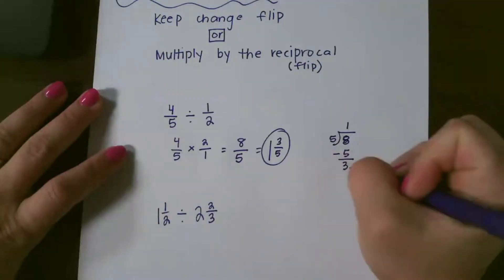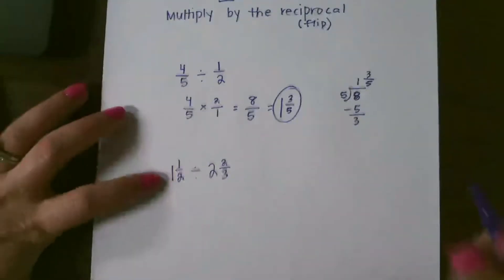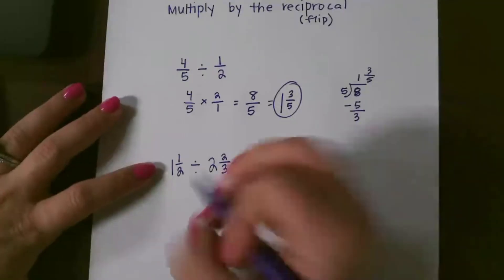So again, 1 with 3 left over, and fifths being our denominator. Alright, for the next one, we have mixed numbers, so we have to change these to improper fractions first.